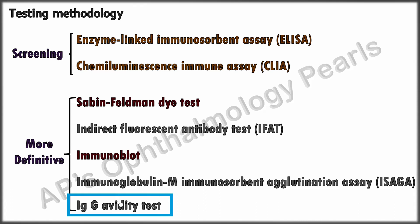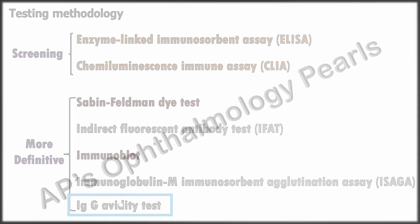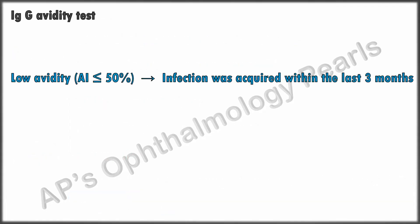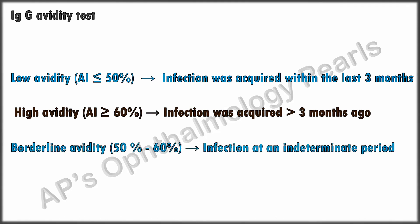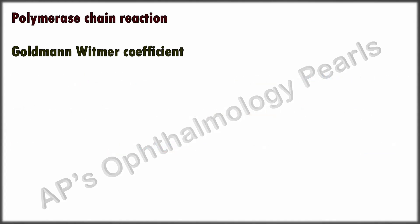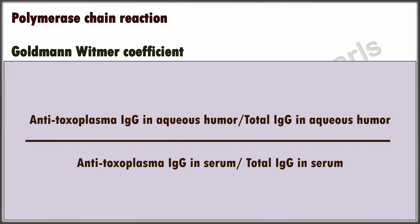The IgG avidity test helps differentiate between acute and chronic stages of infection, particularly in pregnancy and immunocompromised individuals. A low avidity index generally indicates acquisition of infection within the last three months, while a high avidity index indicates infection more than three months ago; an intermediate percentage has no value. More invasive tests such as PCR of aqueous and vitreous may be performed in cases of diagnostic uncertainty, along with the Goldmann-Witmer coefficient, which is the proportion of specific IgG in ocular fluid versus serum.